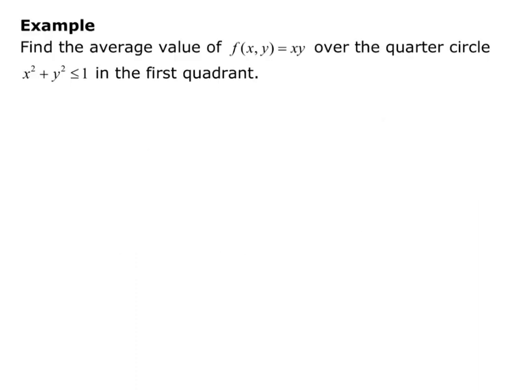Example: Find the average value of f(x,y) equals xy over the quarter circle x squared plus y squared is less than or equal to 1 in the first quadrant.